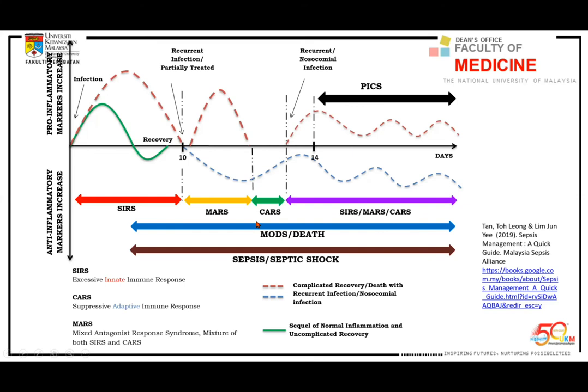This is called the CARS phase — Compensated Anti-inflammatory Response Syndrome. Patients in CARS come in with hypothermia, hypoglycemia, and severe illness. The hallmark of CARS is cold — temperature less than 36°C. Compared with SIRS, where temperature can range from 36 to 38°C with active inflammation. CARS is very specific: very low temperature and very low immunity.